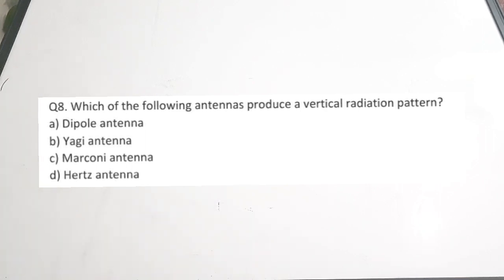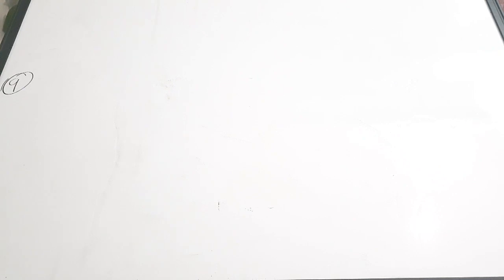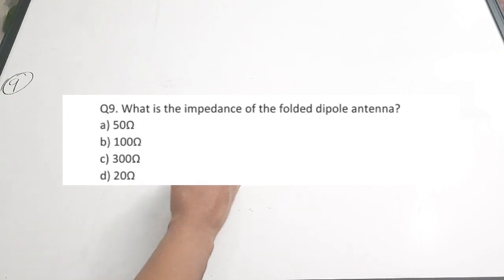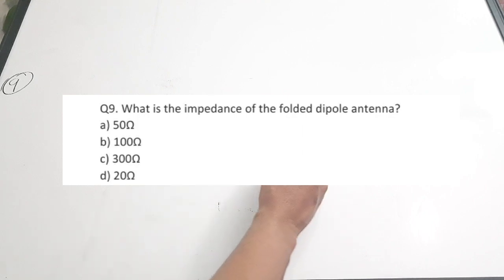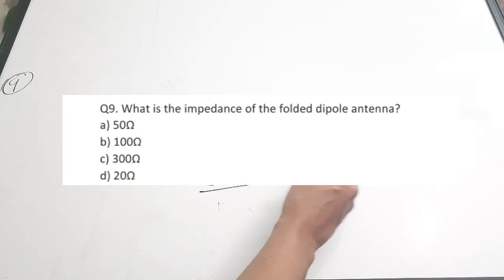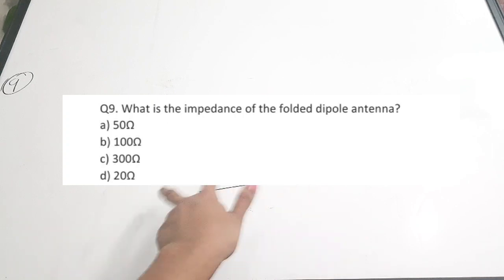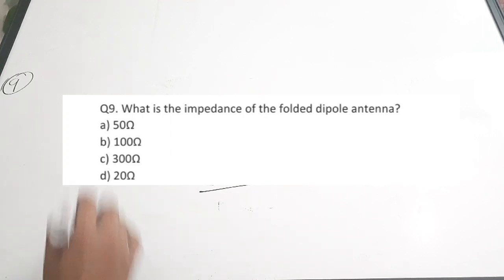The ninth question: what is the impedance of a folded dipole antenna? A. 50 ohm, B. 100 ohm, C. 300 ohms, D. 20 ohms. The impedance of a folded dipole antenna lies in the range of approximately 200 to a maximum of 300 ohms. Since the maximum is 300 ohms and that is the option available, the correct answer is option C — 300 ohms.